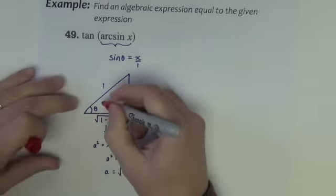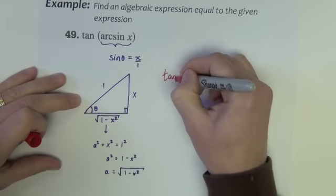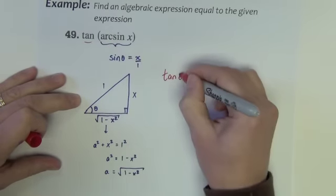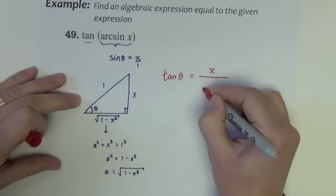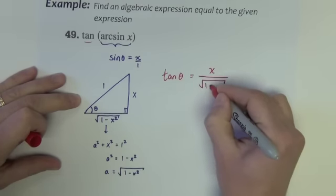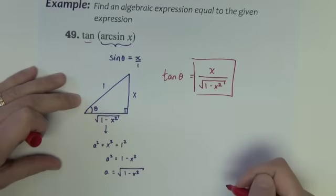Okay, now using the triangle, we want to find the tangent of theta. Tangent is opposite over adjacent. And that's our answer we want.